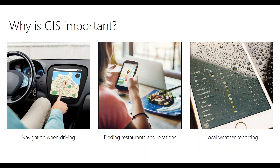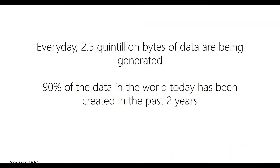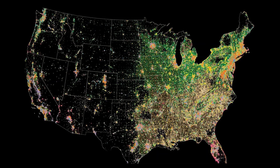So why is GIS important? It's something that's become part of everyday life. You use it when you navigate while driving, or say you're walking around using a GPS to find a restaurant or a movie theater. Anytime you use a GPS system, or even things like local weather reporting and checking the weather app on your phone in the morning — all of that is in conjunction with geographic information systems. And it's how we contextualize information, and there's a lot of it. In fact, every day 2.5 quintillion bytes of data are being generated, and 90% of the data in the world today was created in the last two years.